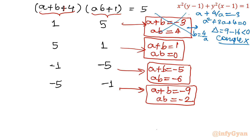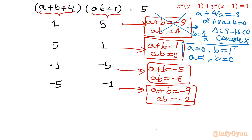Case 2: ab = 0 means either a = 0 or b = 0. If a = 0, then from a + b = 1, b = 1. If b = 0, then a = 1. So we get (a, b) = (0, 1) or (1, 0). All values are integers — this is a valid solution set.